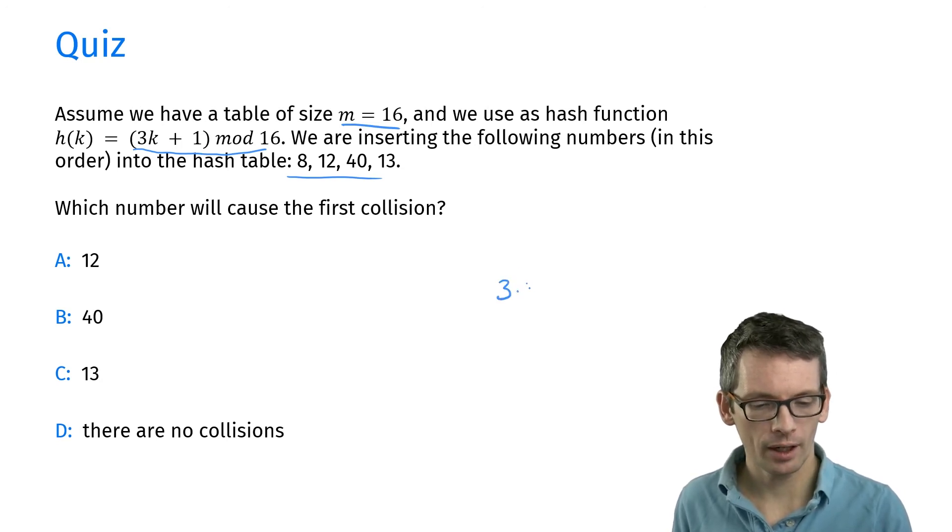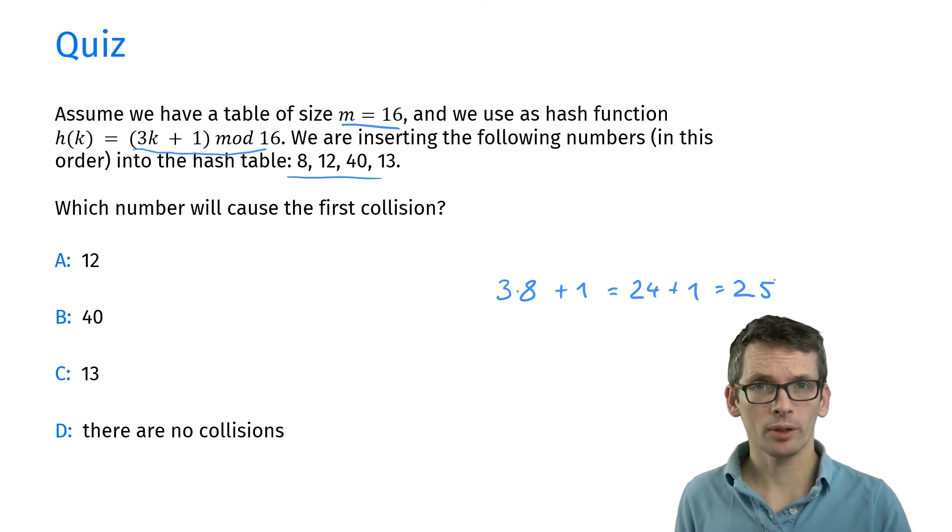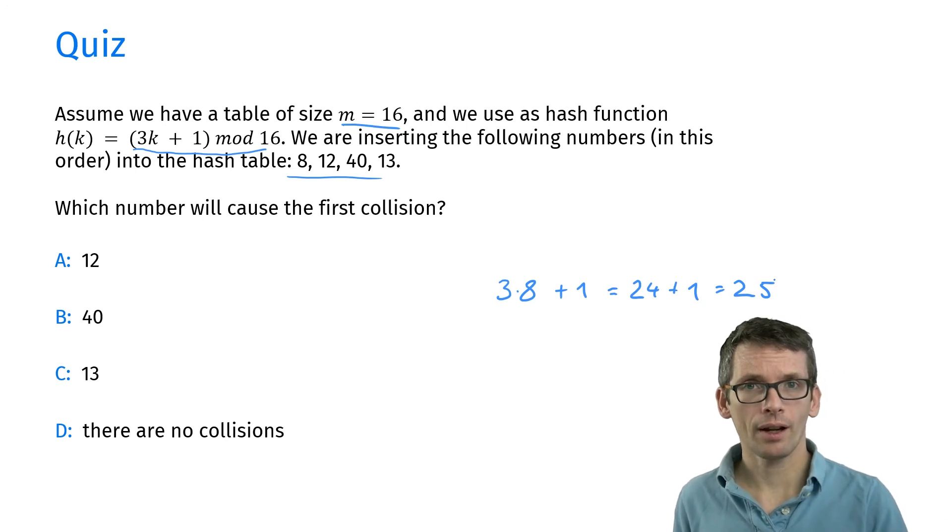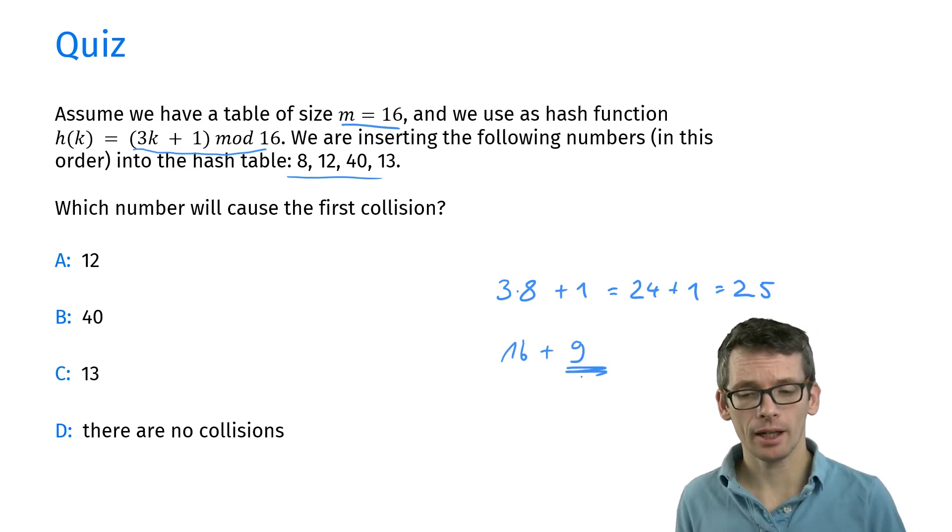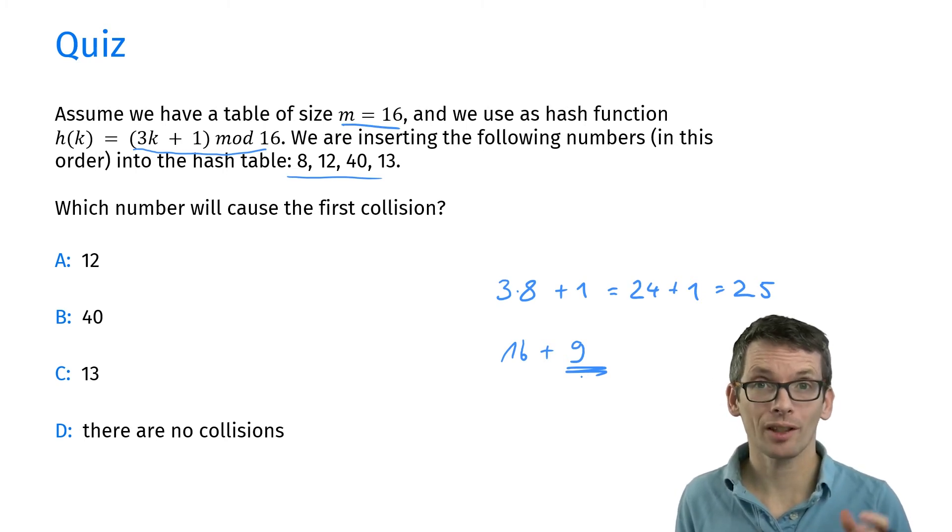So to get you started, let's do the 8 together. 3 times 8 plus 1—that's 24 plus 1, which is 25. Now 25 modulo 16—25 is 16 plus 9. So 9 is the index where the 8 is going to go. Then do the same with 12, 40, 13, and see when the first collision happens.